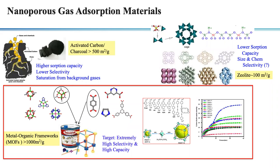By way of background, nanoporous gas adsorption materials are solid materials with defined porosity. It's a combination of the porosity and the functionalization on those pores that enables selectivity and adsorption. Three main categories include activated carbons and charcoals, which generally have about 500 meters squared per gram surface area. These have high absorptive capacity, but low selectivity — they absorb whatever you need them to and tend to have saturation from background gases. But in case of an emergency, including nuclear accidents, this is the perfect material to start absorbing quickly.